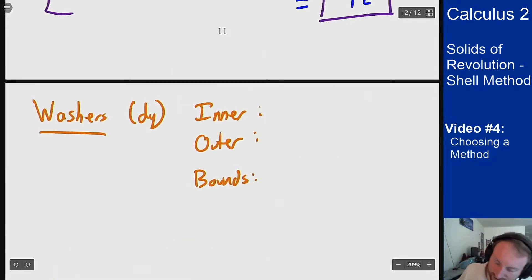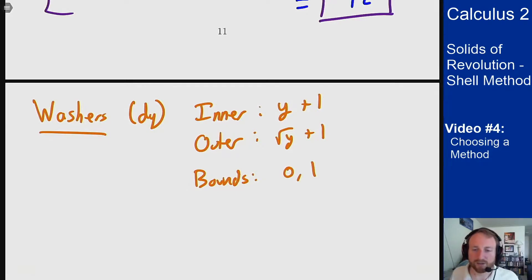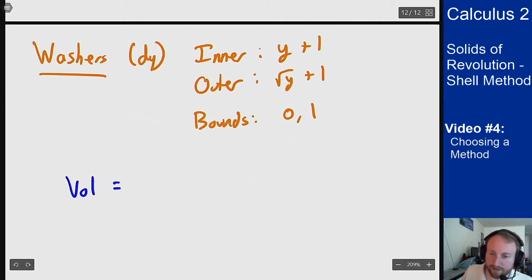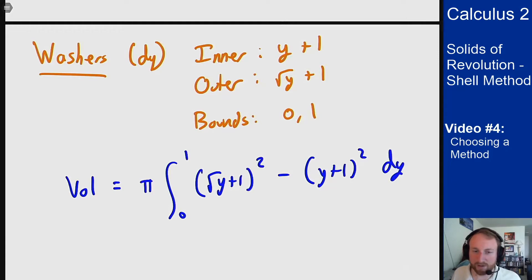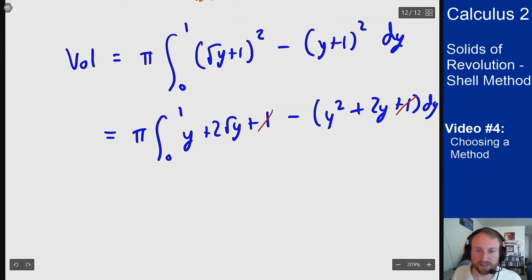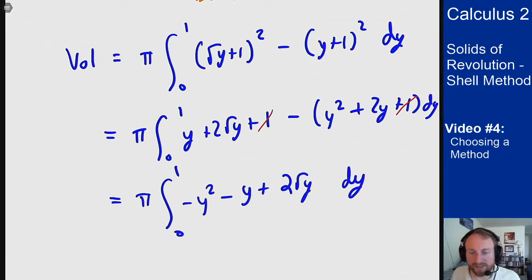So my inner radius was y plus one. My outer radius was root y plus one and then my bounds were from zero to one. And again just like before we can now set up the integral and solve for the volume. The volume here should be pi integral from zero to one outer radius squared minus inner radius squared dy and then we expand these out and solve out this problem. The ones will cancel out once you foil out both terms. Now we can combine things together and then find the antiderivative and solve.